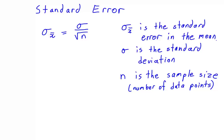Standard error, which is the sigma with the x bar, which means average of x, is equal to the standard deviation, which is this sigma over here, divided by square root of n.